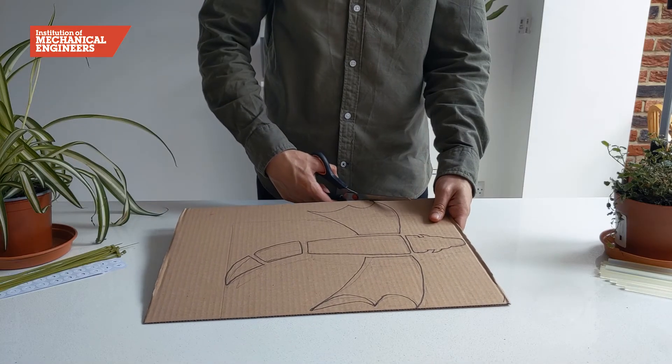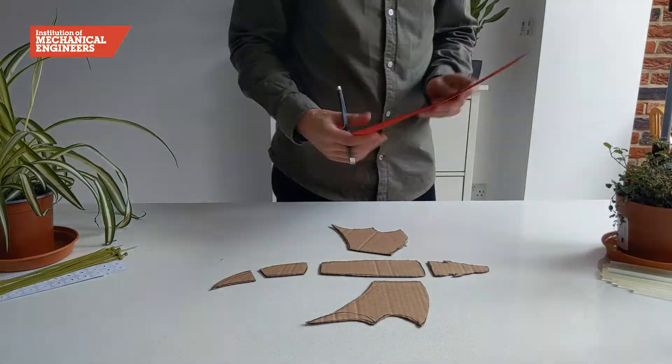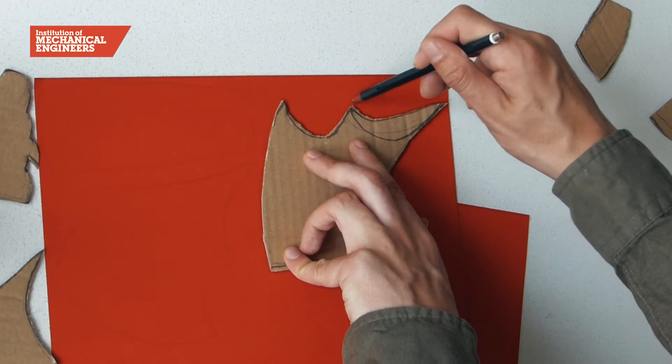Here we've drawn a design on card first and cut it out before using that as a stencil with coloured card and glue to make it look more like a dragon.